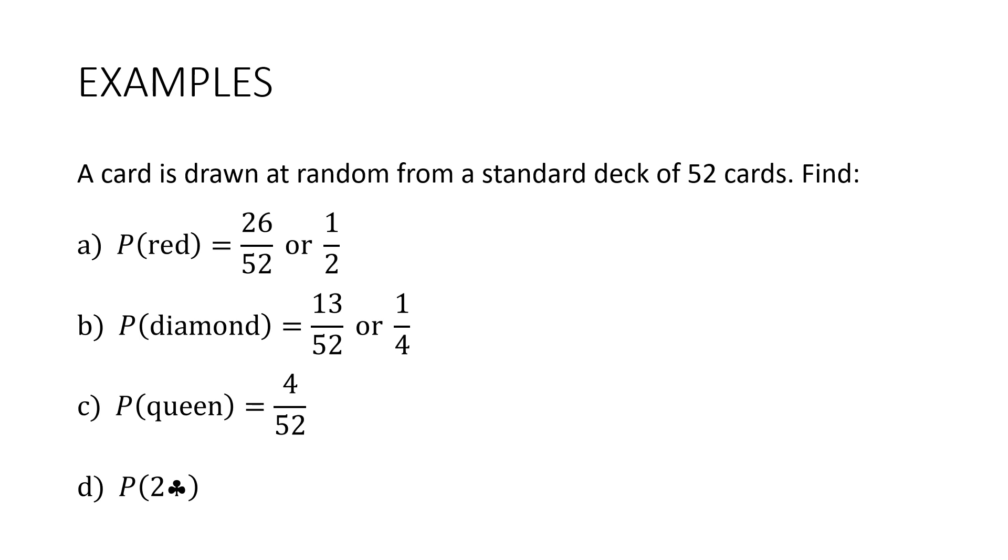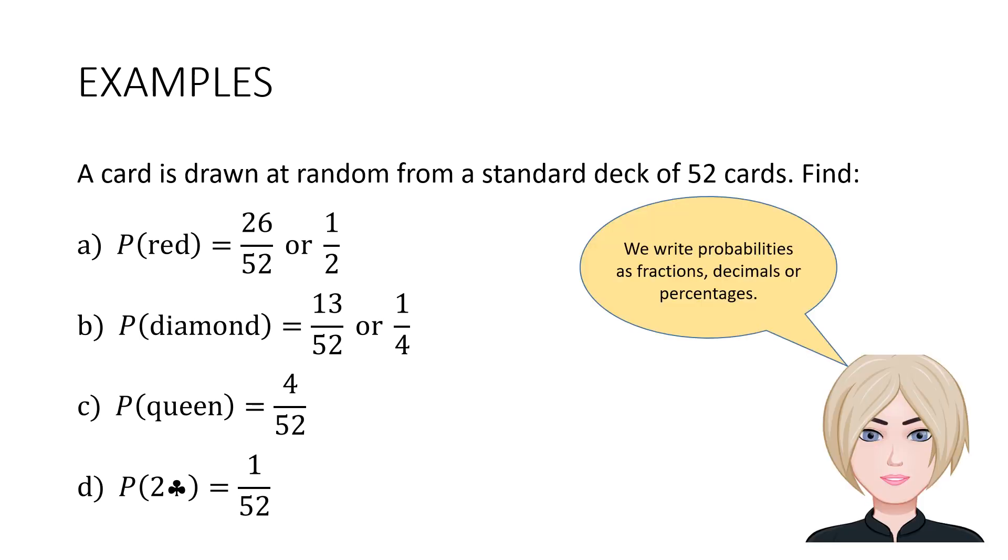The probability that it is the 2 of clubs. There's only one 2 of clubs. So our answer is 1 on 52. Now I should mention that we write probabilities as fractions, decimals or percentages. It doesn't really matter which one you choose. But it's often easier to write them as fractions.